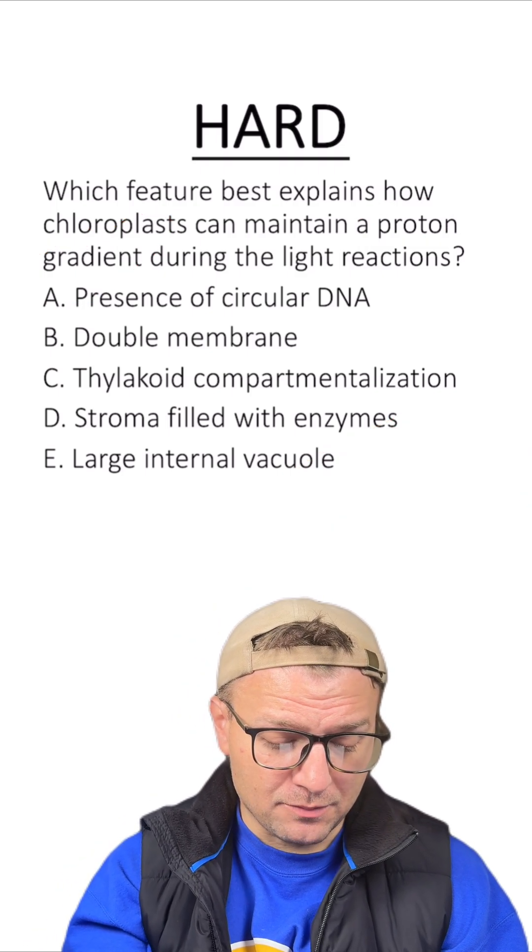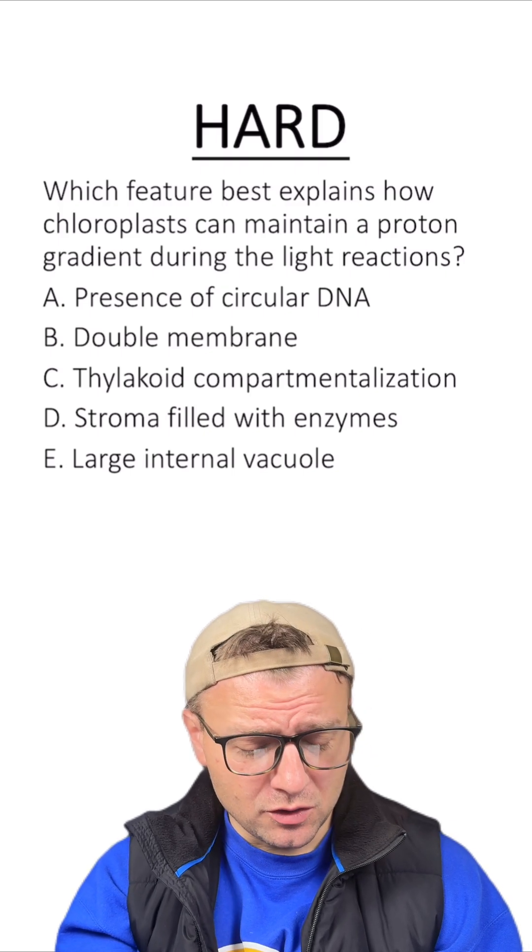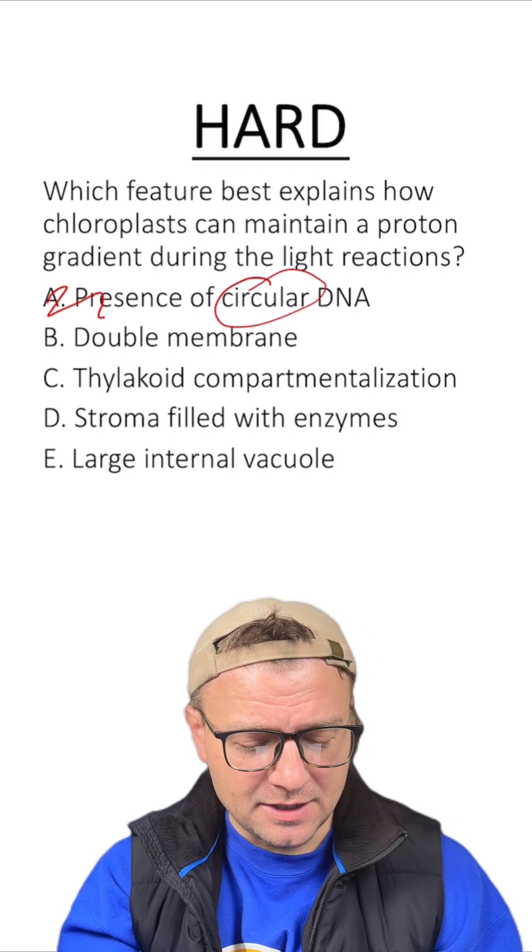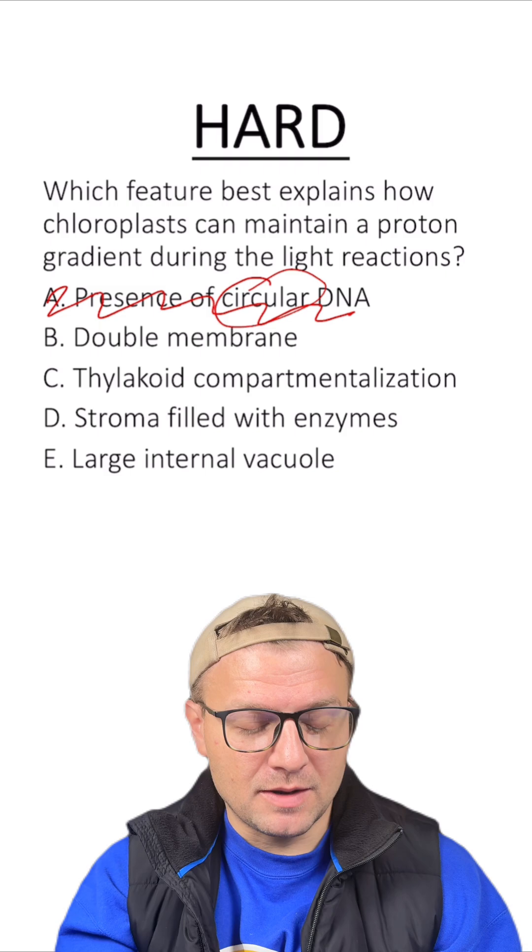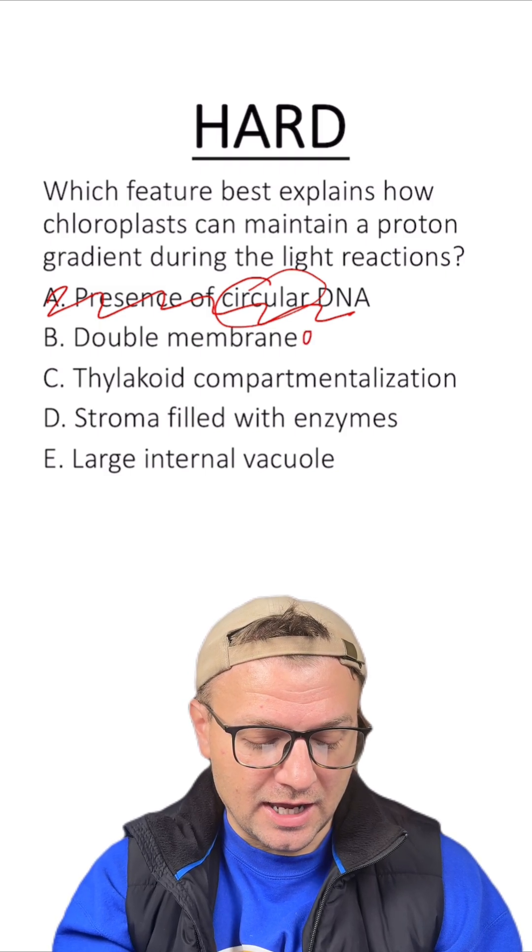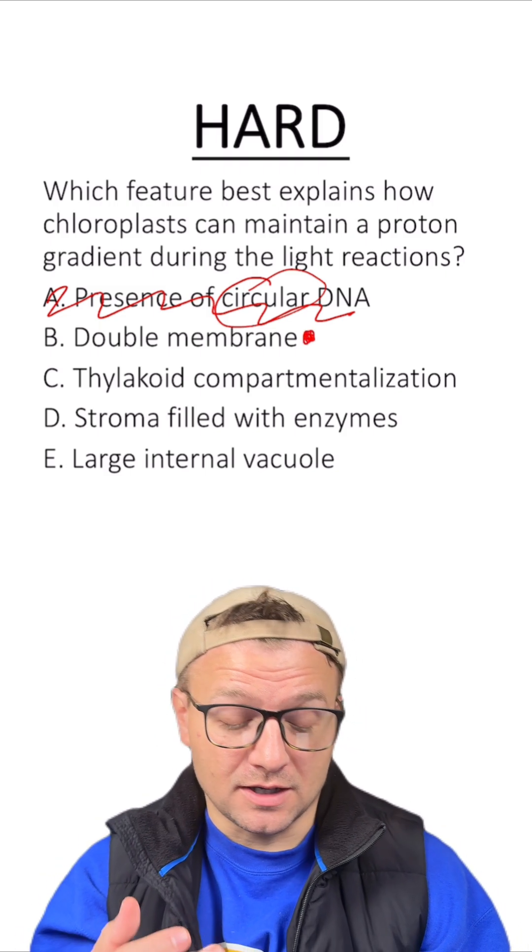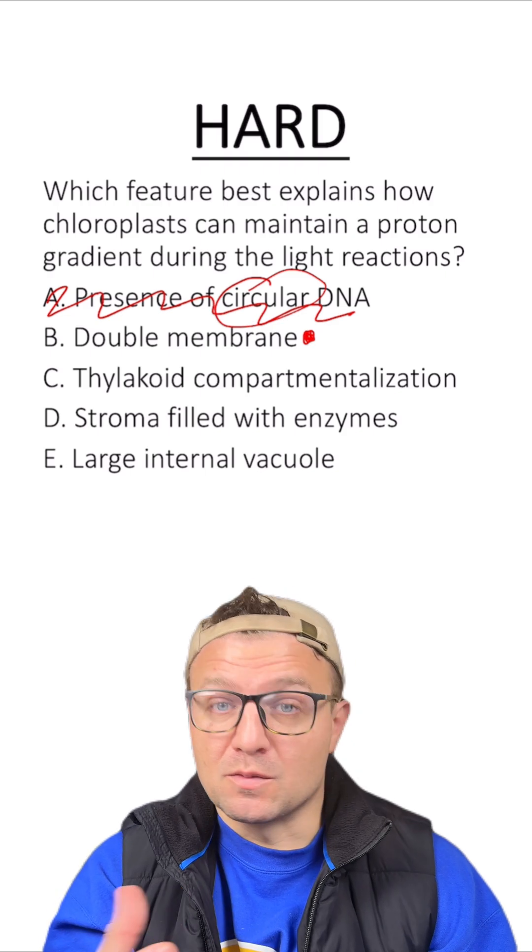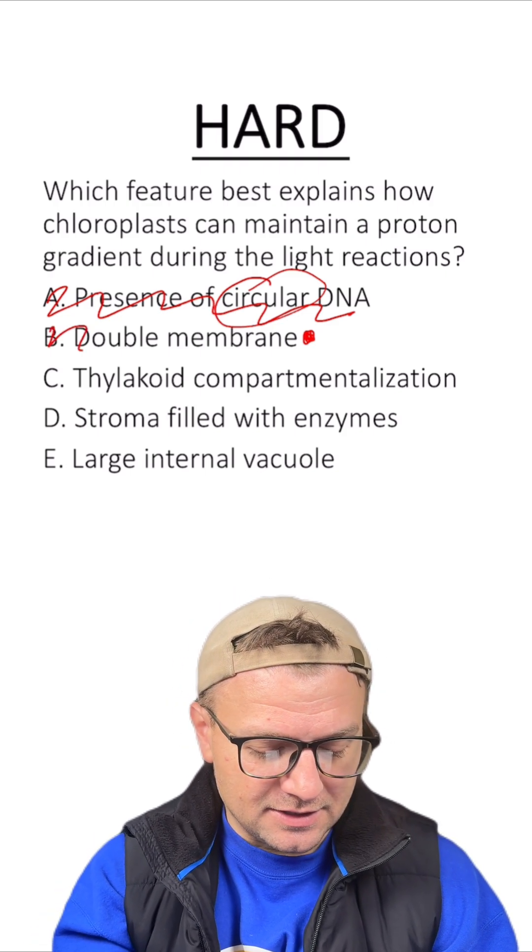Let's go through our answers. A, presence of circular DNA. Well, the chloroplast does have circular DNA, but that doesn't really help here. B, the double membrane. That sounds like a good answer because membranes help us create these smaller spaces, but it's not really because of the double membrane.